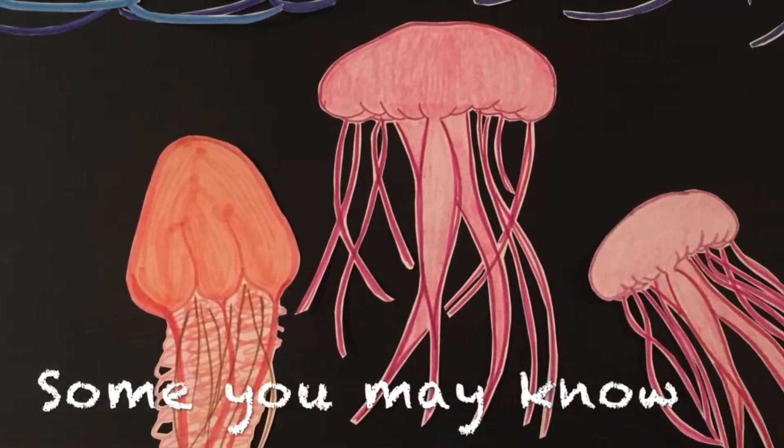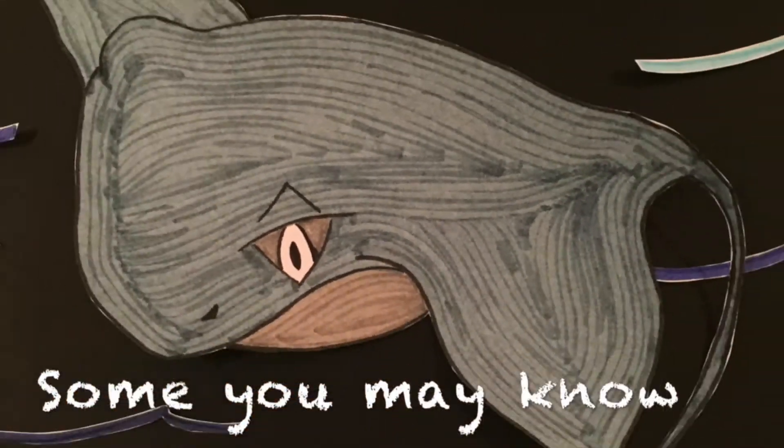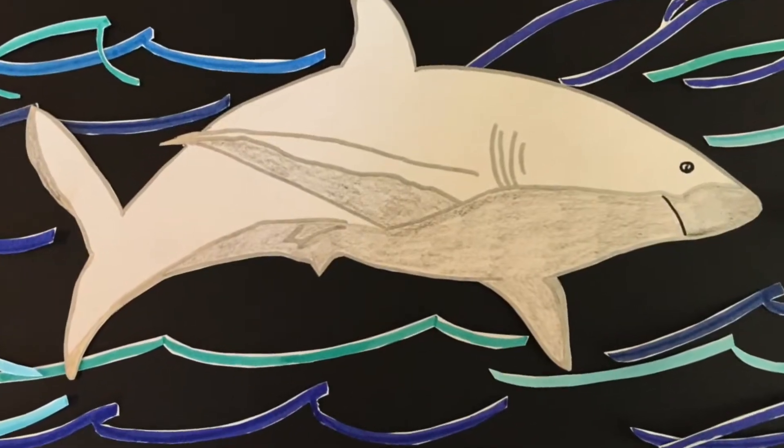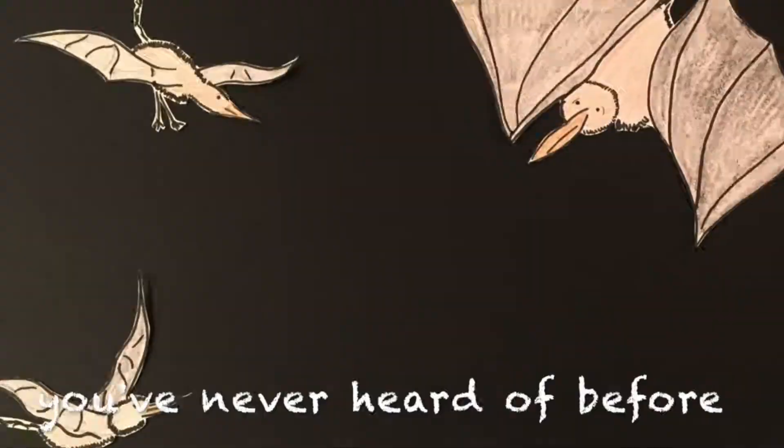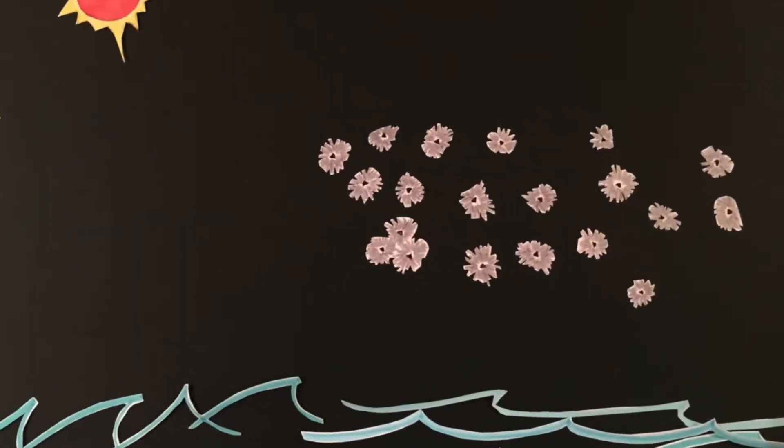Some you may know, like sea jellies, manta stingrays, and white sharks. Others you've probably never heard of before, like the Haru, Milex, and Poplix.